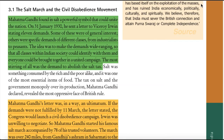The Salt March and the Civil Disobedience Movement. Mahatma Gandhi found in salt a powerful symbol that could unite the nation. On 31st January 1930, he sent a letter to Viceroy Irwin stating 11 demands — some of general interest, others specific demands of different classes from industrialists to peasants — to make the demands wide-ranging so that all classes within Indian society could identify with them. The most stirring of all was the demand to abolish the salt tax. Salt was consumed by the rich and the poor alike and was one of the most essential items of food. The tax on salt and the government monopoly over its production, Mahatma Gandhi declared, revealed the most oppressive face of British rule.